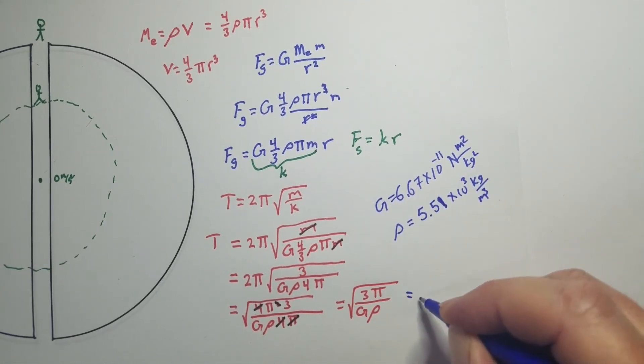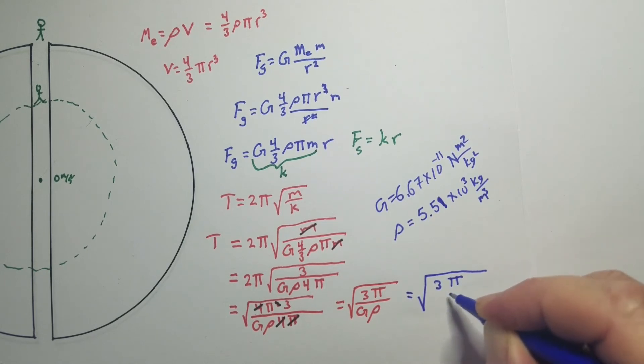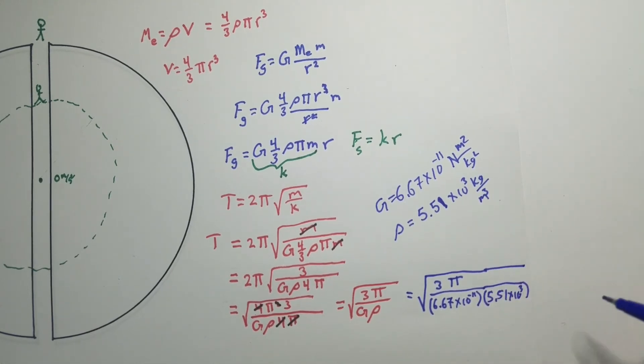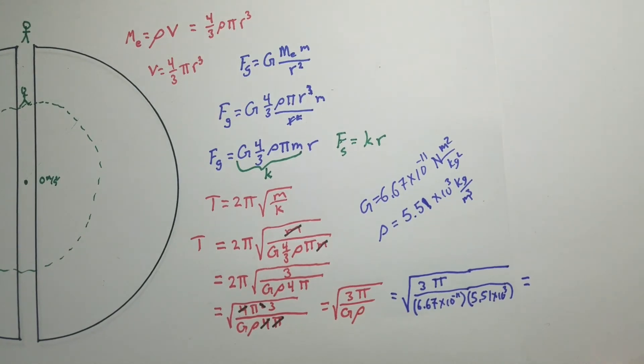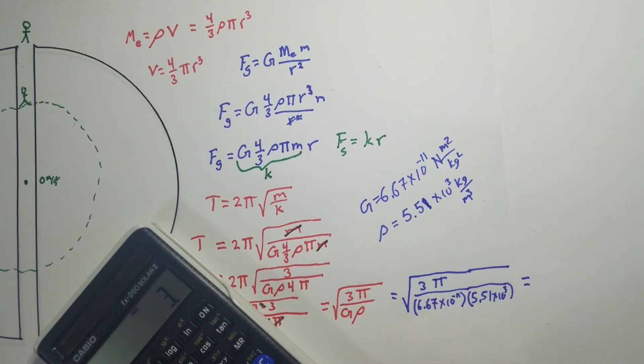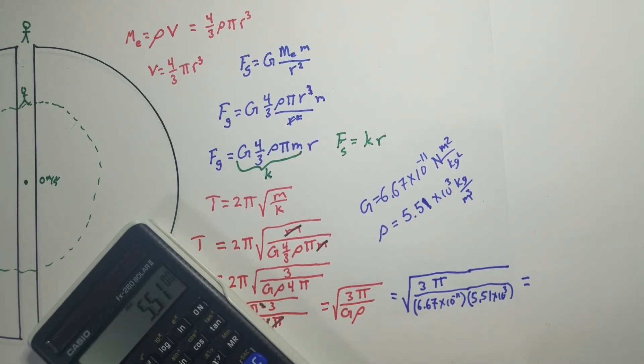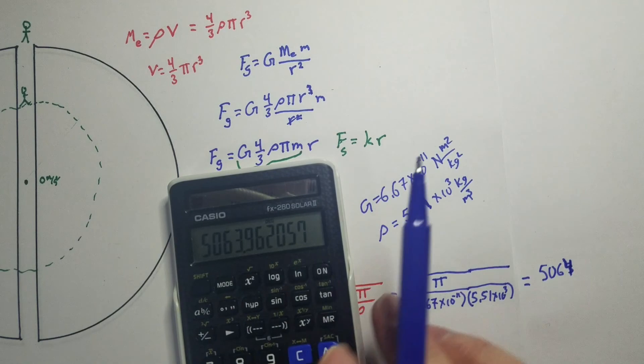So we're going to put those numbers in here and see what we get. So I'm going to carry this on over. So that square root of 3 pi over 6.67 times 10 to the minus 11 times 5.51 times 10 to the third all that's underneath that square root. And I'm going to keep going over here to the left so I'm going to keep moving left. Here we go. 3 times 3.14159 I'll carry it out a little bit more divided by 6.67 times 10 to the negative 11 divided by 5.51 times 10 to the third and then we're going to take the square root and when we do that we get 5064 because that's going to round up a little bit if you can see that. That's going to round up some seconds.